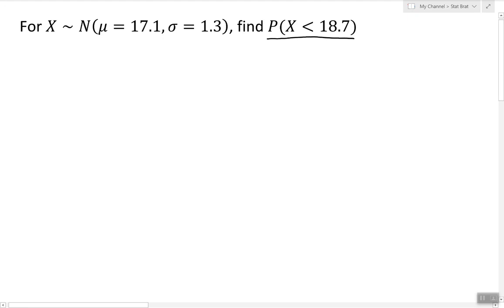In our case we have the probability of x being less than 18.7, and we're going to do this process in two steps.